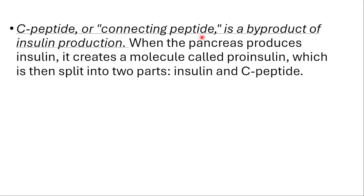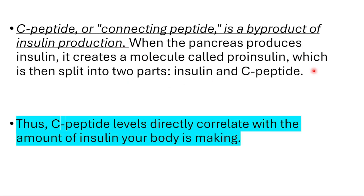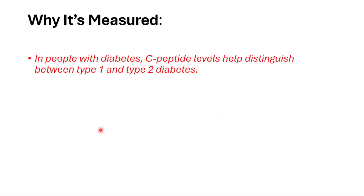When the pancreas produces insulin, it creates a molecule called proinsulin, which is then split into two parts: insulin and connecting peptide. Thus, C-peptide levels directly correlate with the amount of insulin your body is making.